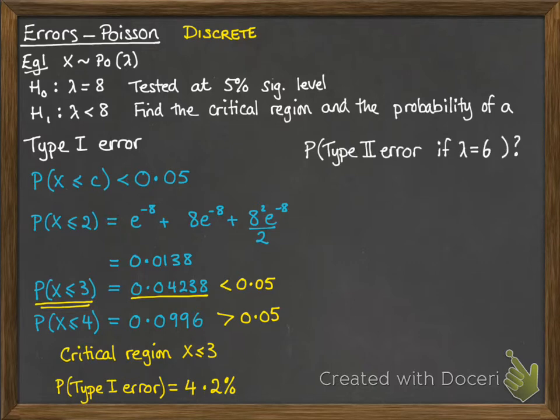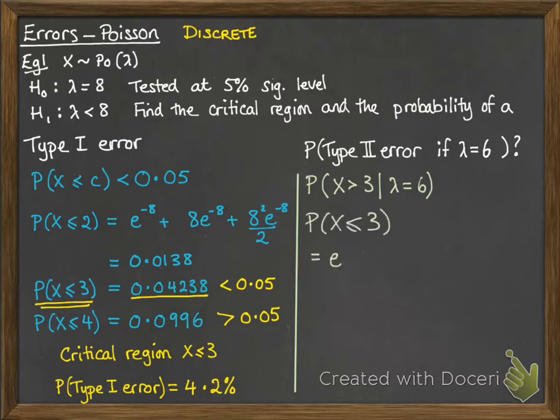Now what would be the probability of a type 2 error if lambda was actually 6? So we need the probability that x gets accepted, but the null hypothesis was actually wrong, and we would have an alternative lambda of being 6. So for the null hypothesis to be accepted, x would have to be bigger than 3.